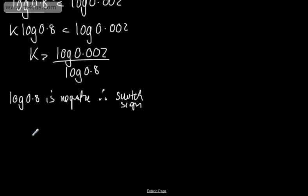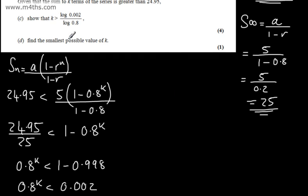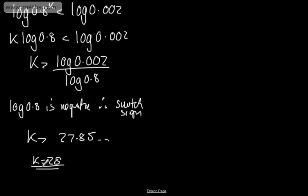So k has got to be greater than 27.85 continuing. And we need to give the smallest value. So the smallest value, if k has got to be greater than this, k is going to equal 28. So that gives us our final mark. All we've done is evaluated this, and k is 28.